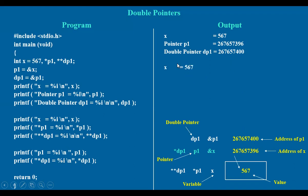Suppose if you take x here, star p1 gives the same value. Star p1 — we know that this star p1 gives you the value which is stored in this particular address. So star p1. Now, double star dp1 — that is dp1 — star gives this dp1, okay, this value.